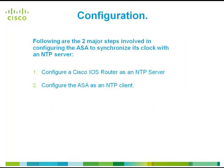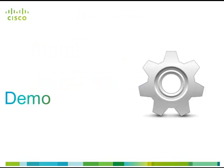Following are the two major steps involved in configuring the ASA to synchronize its clock with the NTP server. The first step is to configure a Cisco IOS router as an NTP server. The second step is to configure the ASA as an NTP client. Let's view a demonstration of the configuration explained in this video.